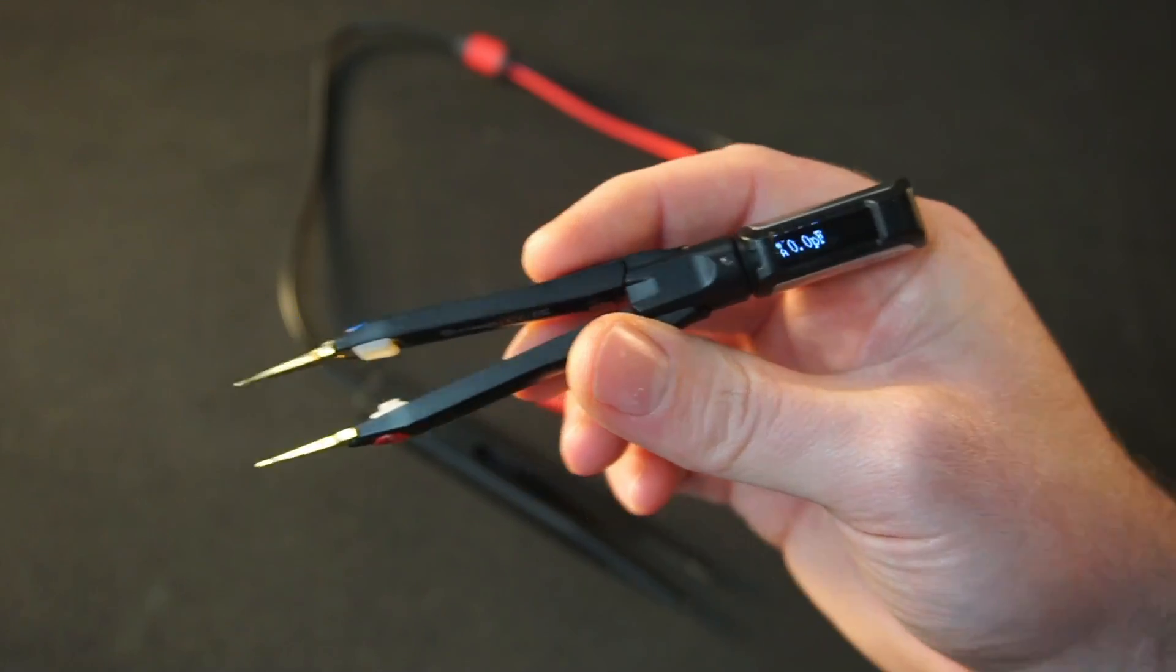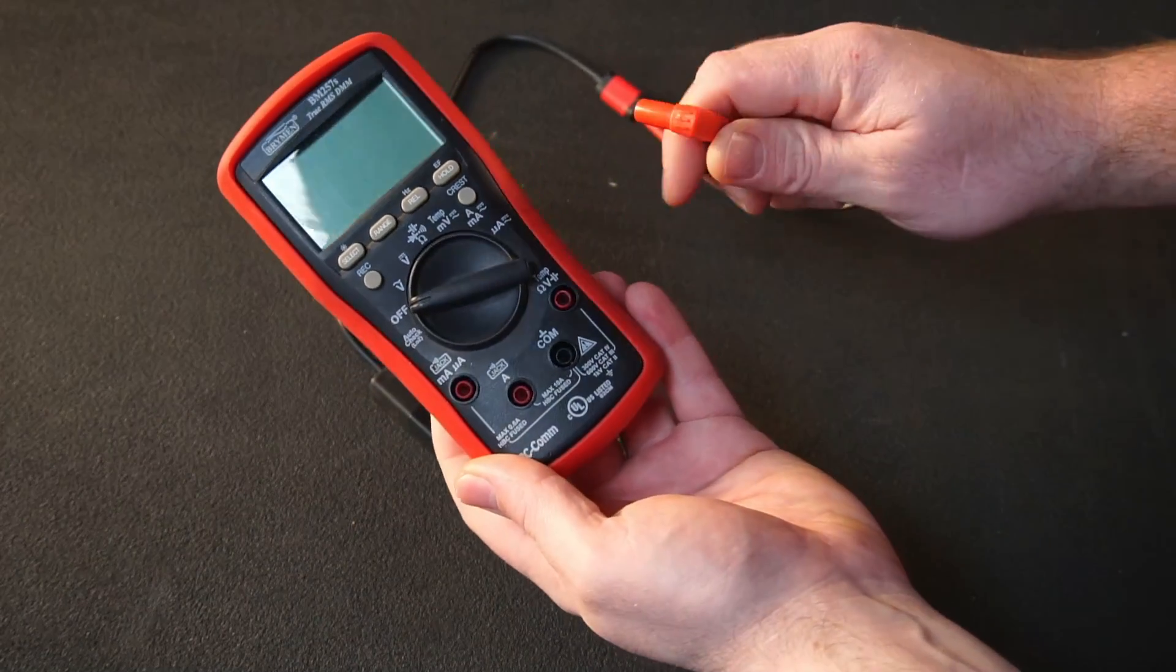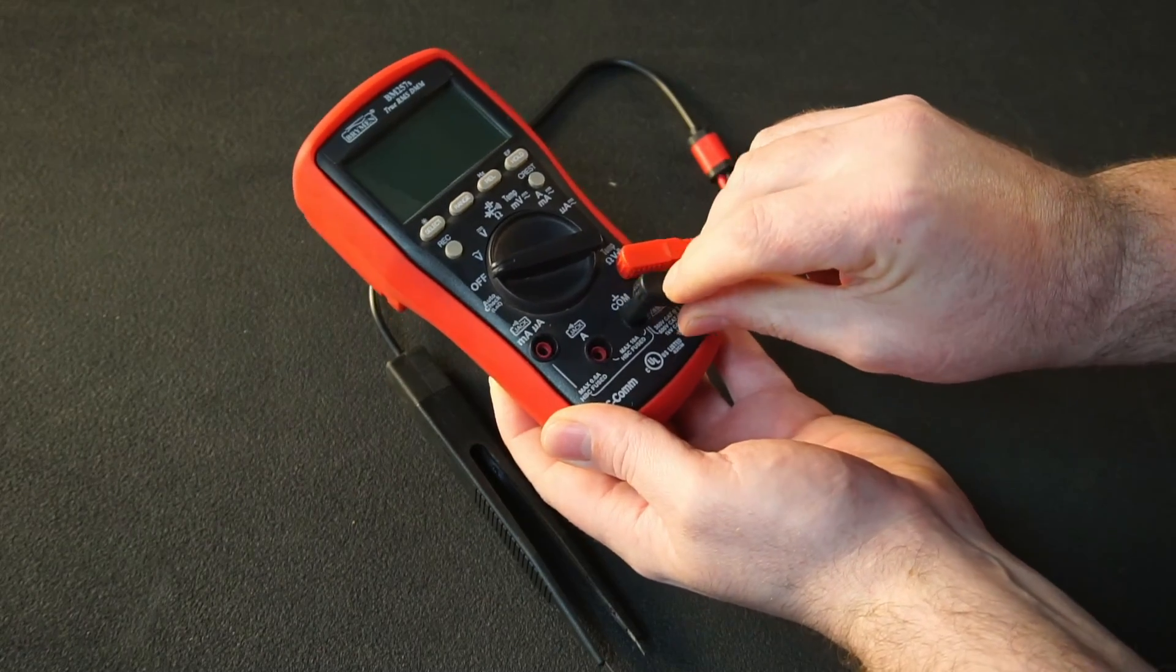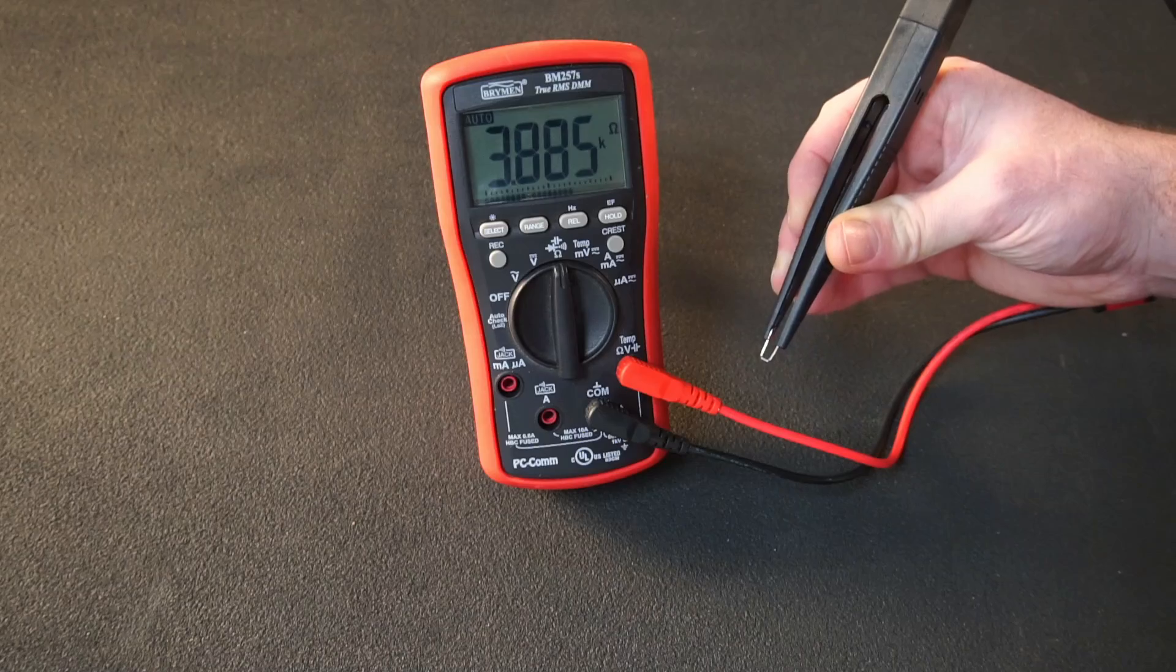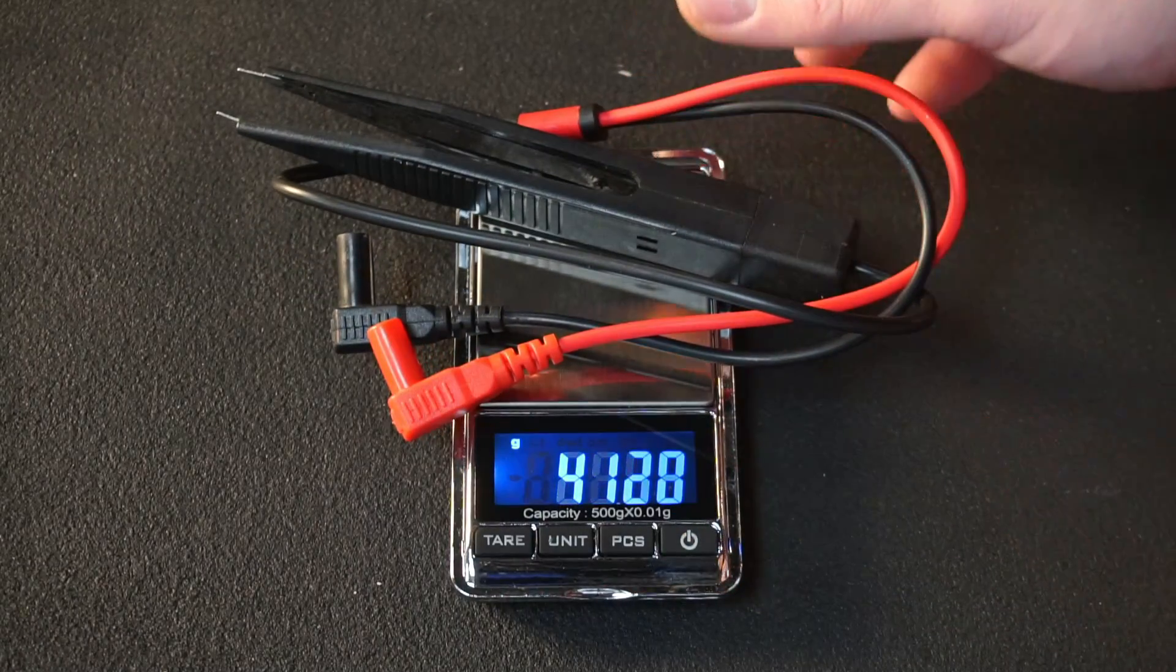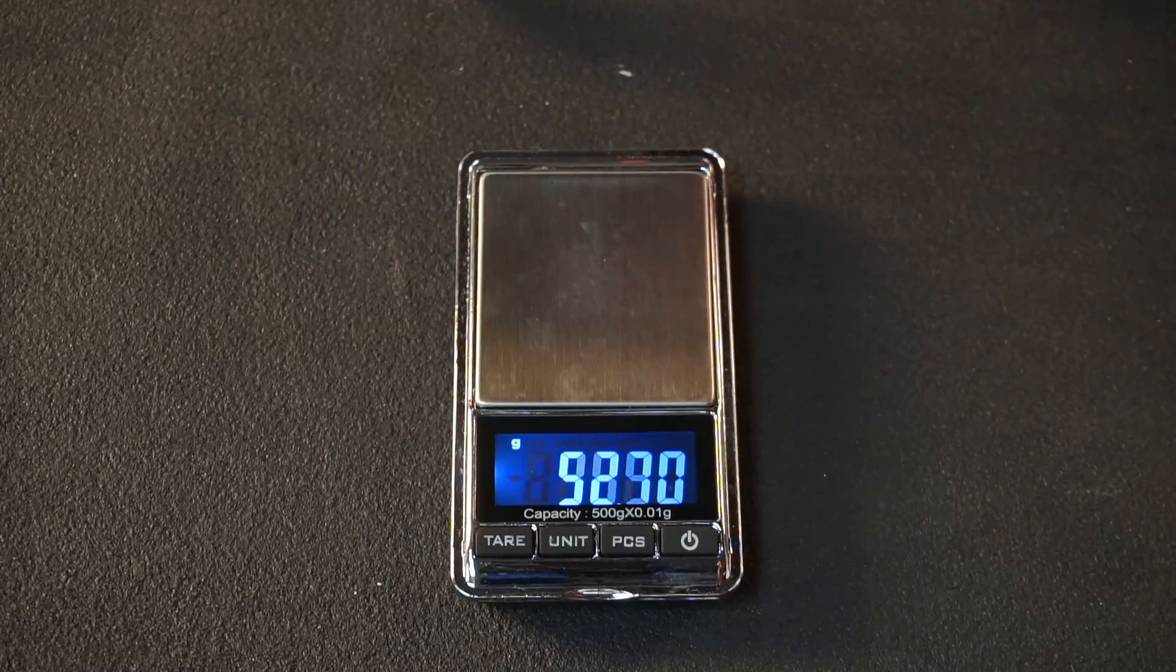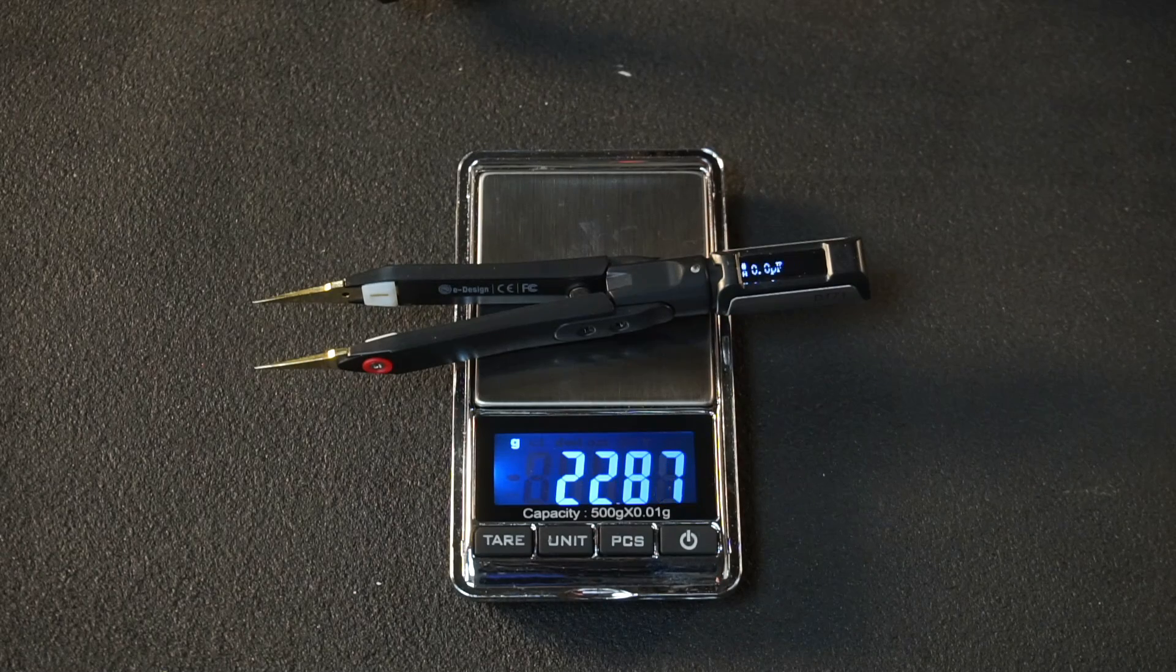Alternatively, if you rarely work with SMD components and can't justify buying the DT71s, a cheaper option is to buy a set of tweezers that can plug into your multimeter. But it's nowhere near as nice to use, having a cord to deal with all the time. And including the cord, they weigh almost twice as much as that of the DT71s. So if you're into SMD work on a regular basis, I highly recommend picking up the DT71s.